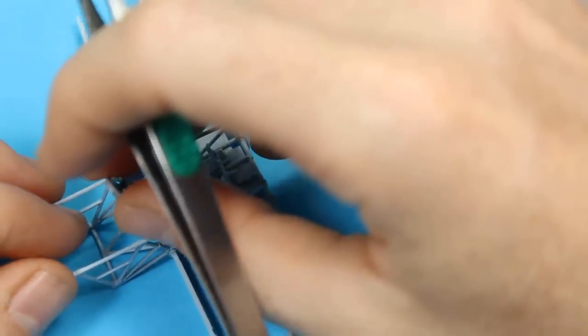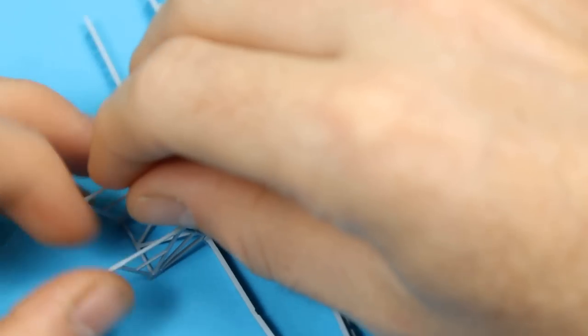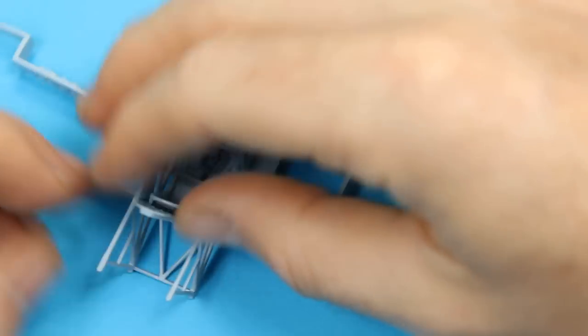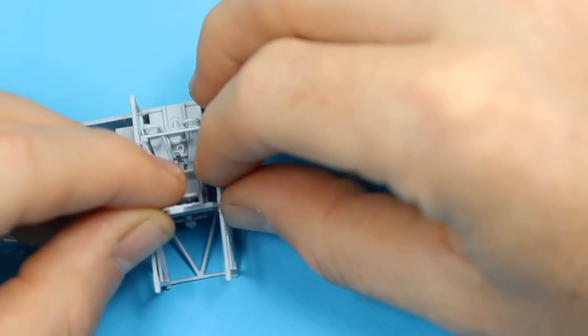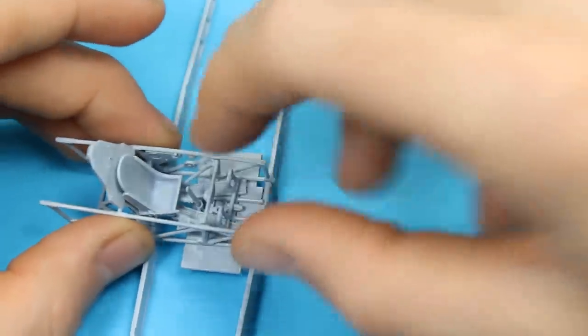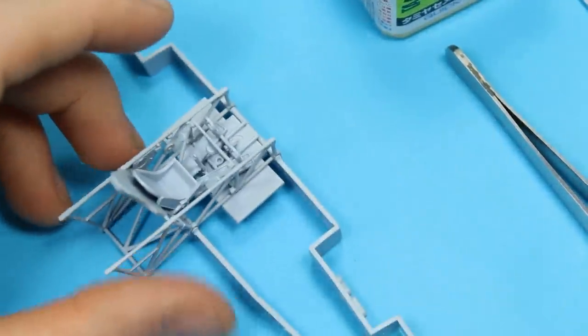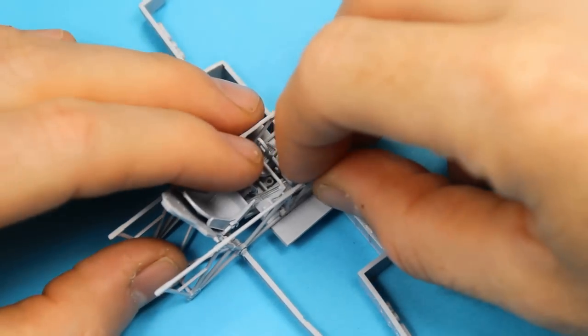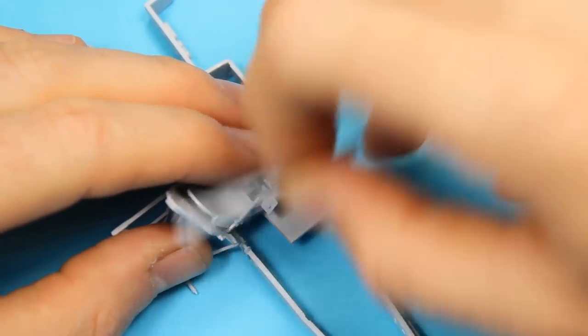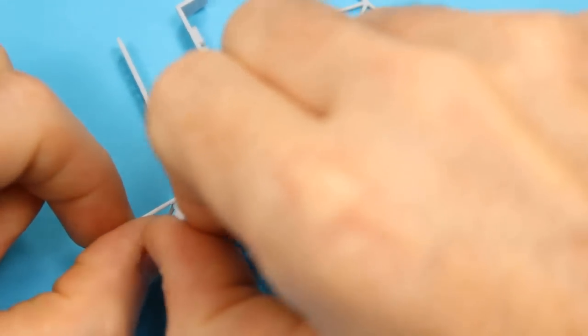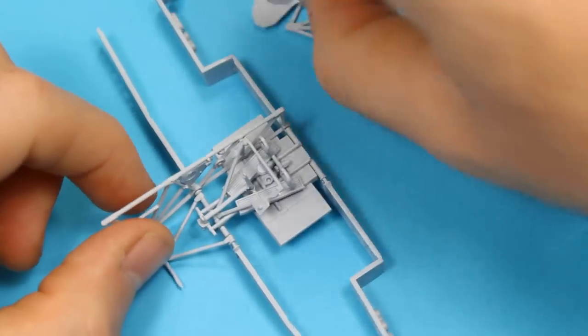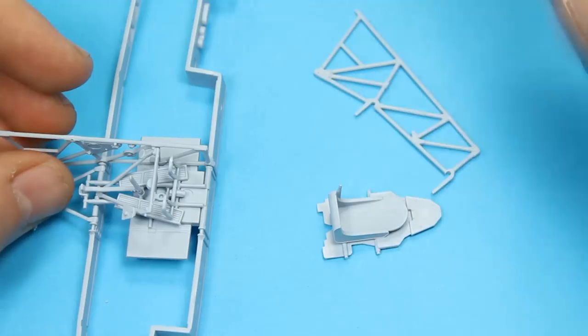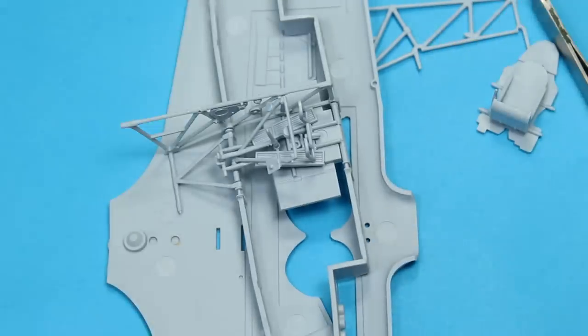After you've got the two sidewalls on, we've got the rear bulkhead going in which has got the seat attached to it. This is all dry fit - I'm just trying to see what I can get away with once it's all put together and how much I can paint. The bulkhead and chair being interior green makes it challenging.